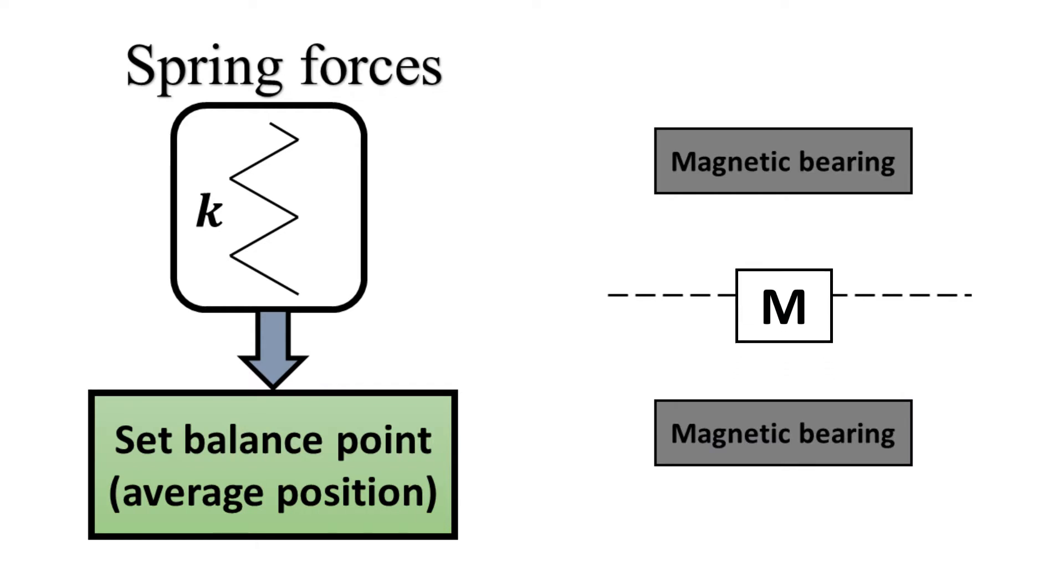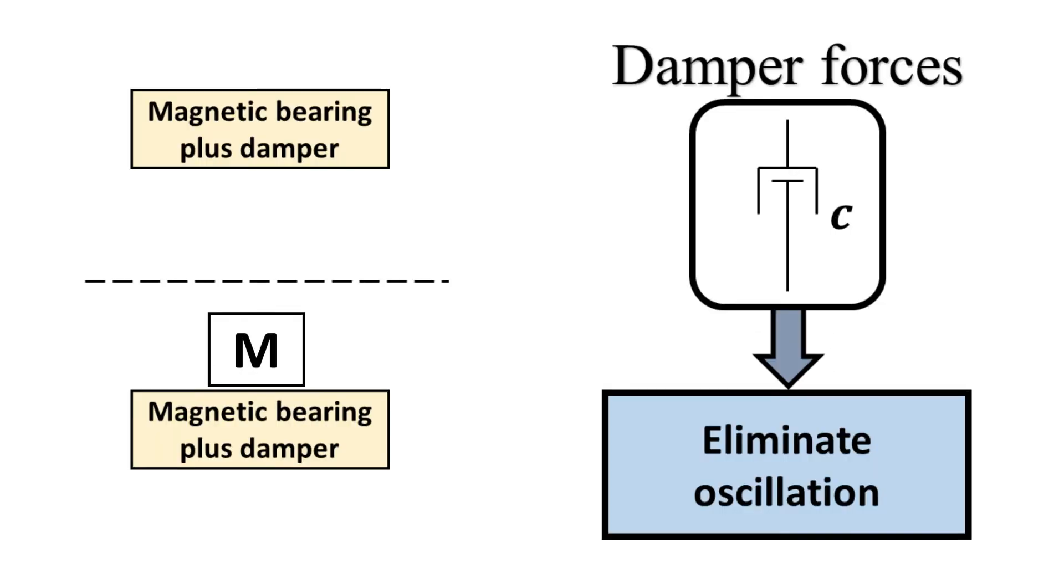Without damping, a magnetically suspended body would keep oscillating forever around the average position and never achieve true balance. But if a magnetic bearing is combined with damping effect, oscillation stops and balance is achieved.